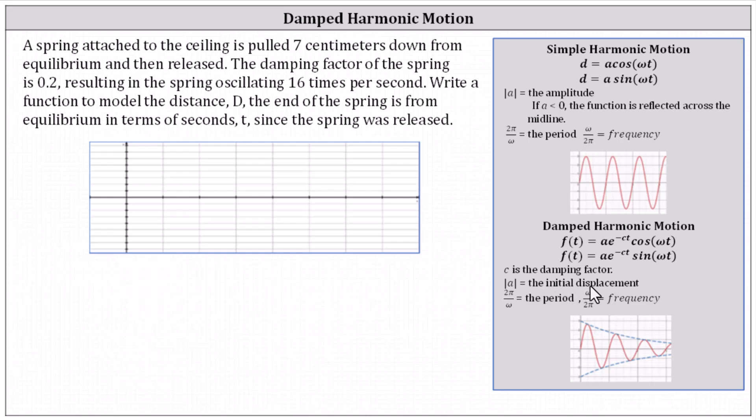We'll have to determine the sign of a by the given information. Two pi divided by omega equals the period, and therefore omega divided by two pi equals the frequency. Recall the period and frequency are reciprocals of one another.